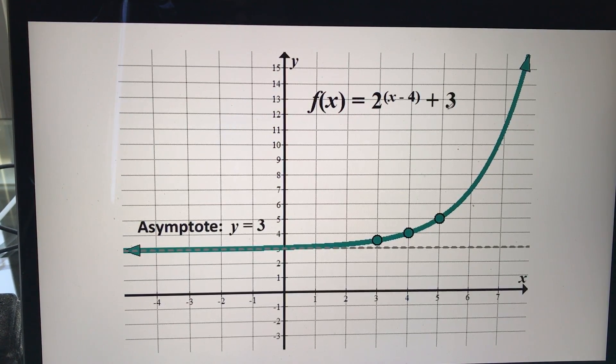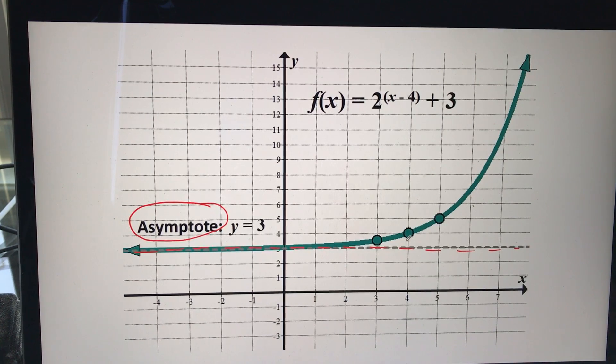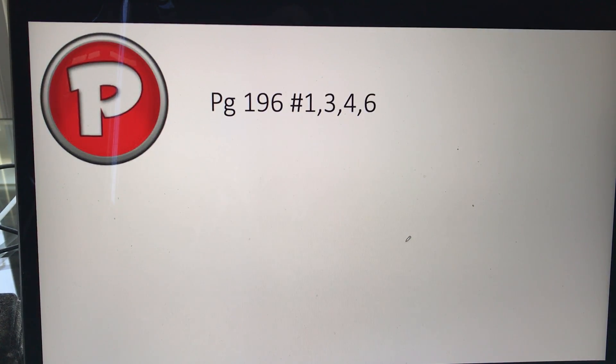And again, a couple things together here. Again, I just want to show, this is the word I'm saying, asymptote. And this is this invisible line, basically, that the function is trying to hit. That's it. Take a look at page 196.